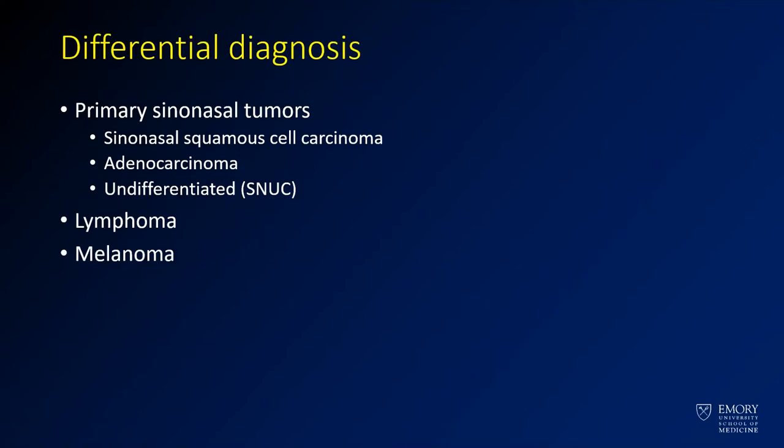The differential diagnosis for these masses — you can't always just call them esthesioneuroblastomas, although that's a classic description. You really have to think about primary sinonasal tumors, particularly squamous cell carcinomas, which are probably vastly more common than esthesioneuroblastomas. Lymphoma, melanoma, and metastases can have a similar appearance.